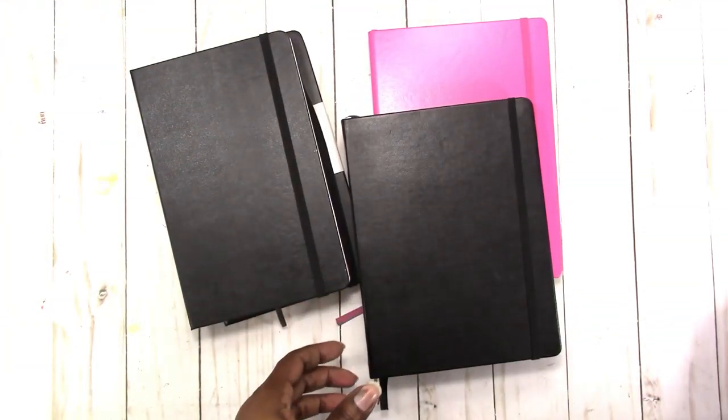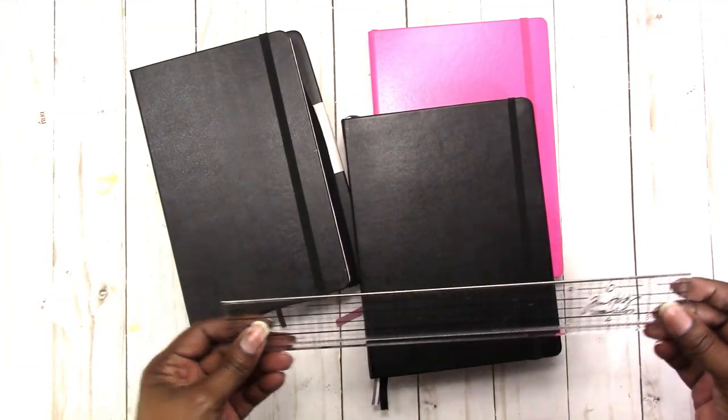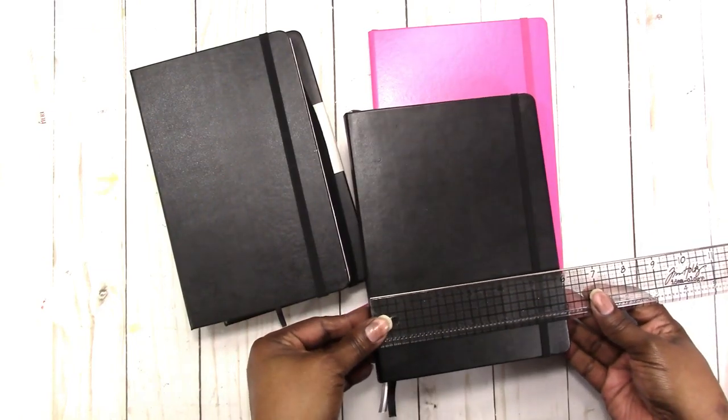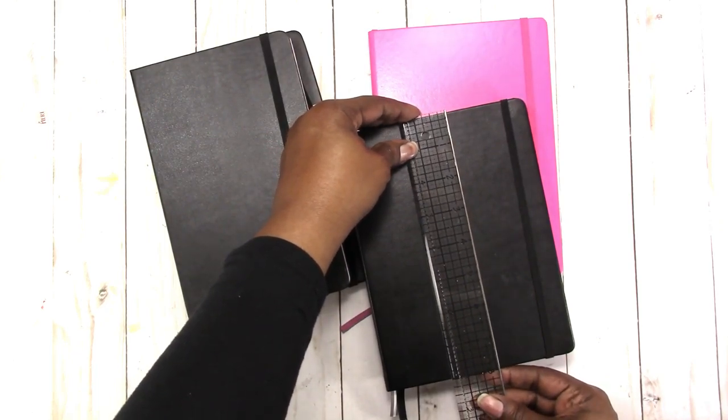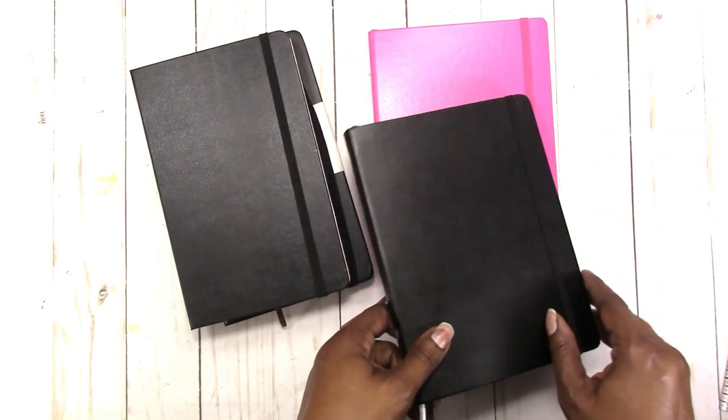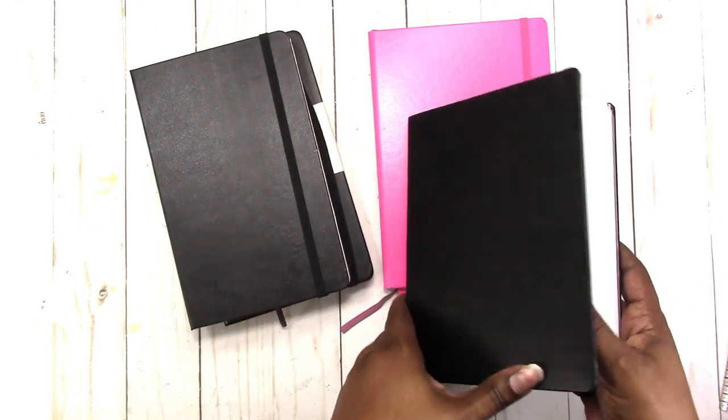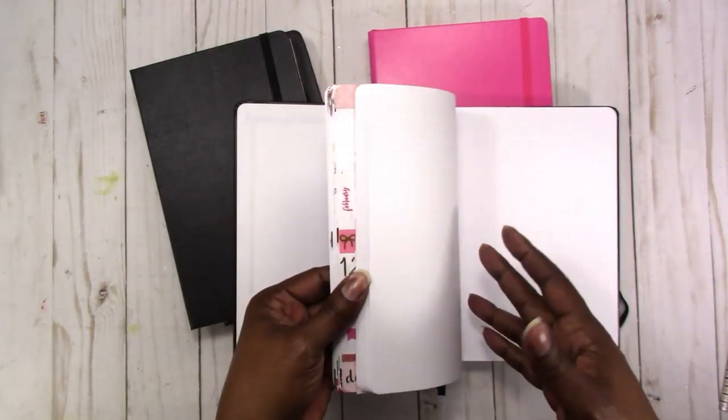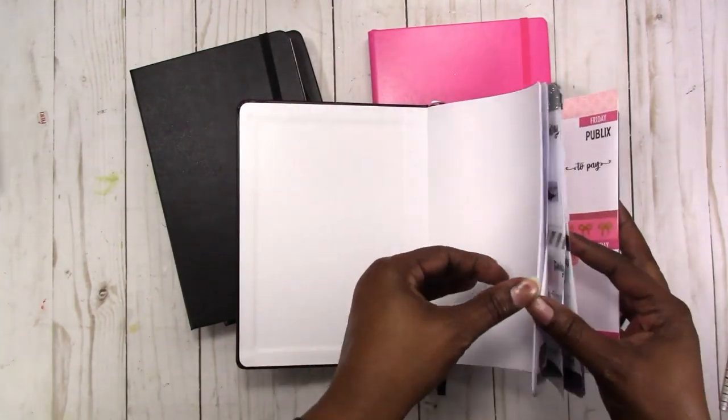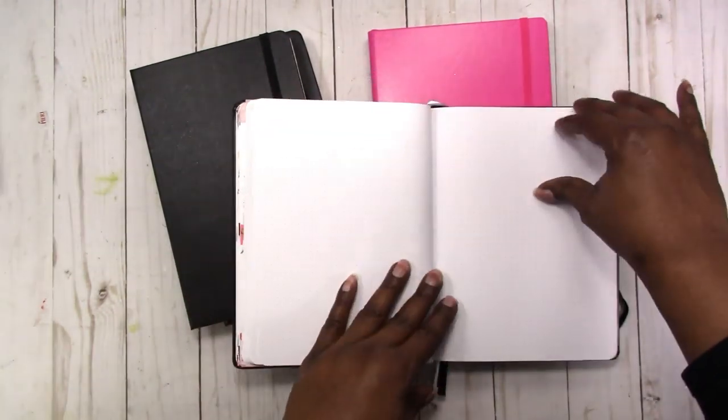It is a dot grid journal. It measures six by eight. It has white paper. I use it for my planner spreads. It isn't the best quality paper - I would estimate that it may be 24 pound paper.